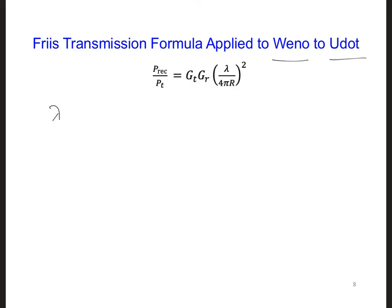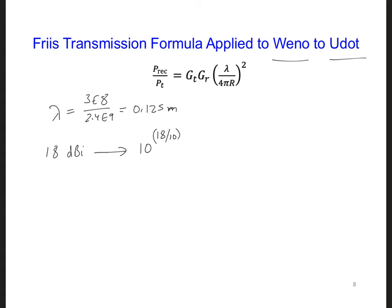First, we need the wavelength: λ = 3×10⁸ / 2.4 GHz = 0.125 meters. For the gain values, we can't plug in dB values directly — we need to convert to linear values. For 18 dBi of gain, we take 10^(18/10). If we were going the reverse direction we'd take 10·log₁₀, so we're just doing that in reverse. This gives us a linear gain value of 63, which is dimensionless.